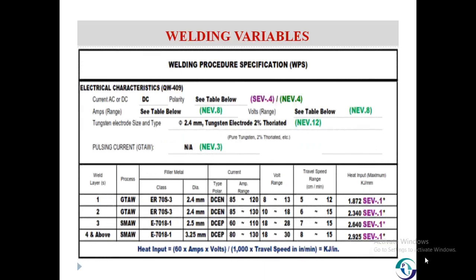Next are electrical characteristics. A change in current from AC to DC, or polarity from negative to positive or straight to reverse, is a non-essential variable when there is no impact test, but becomes a supplementary essential variable when there is an impact test. Ampere range and voltage range are non-essential variables. Tungsten electrode size and type is a non-essential variable. Addition or deletion of pulsing current to the DC source for GTAW is a non-essential variable. An increase in heat input above the qualified heat input is a supplementary essential variable when an impact test is applied; here is the formula for calculating heat input.